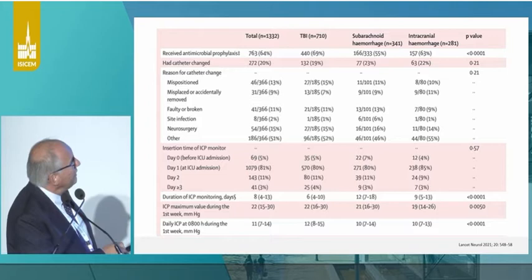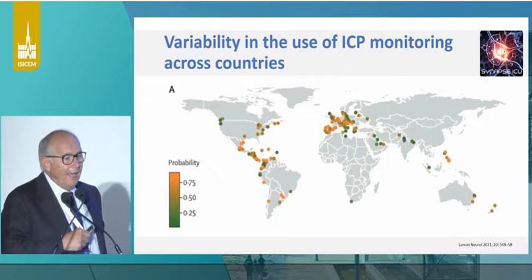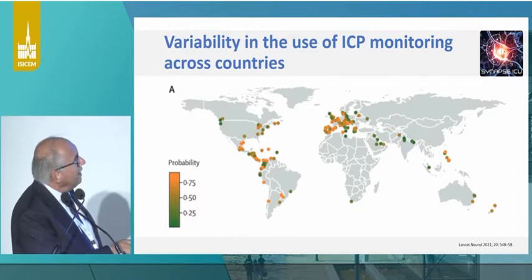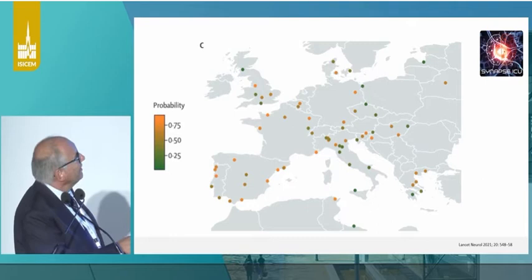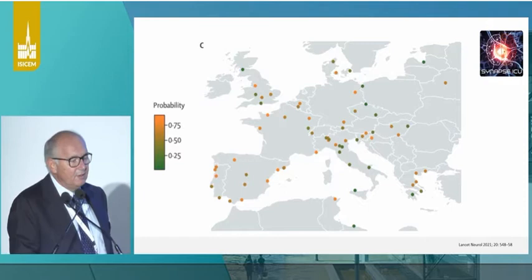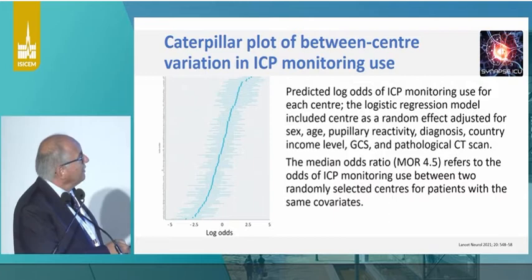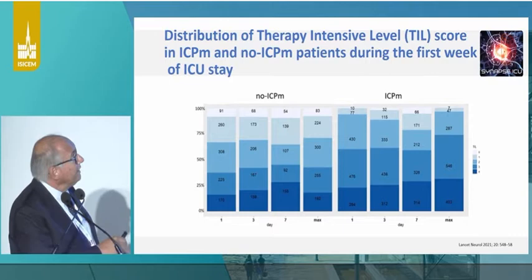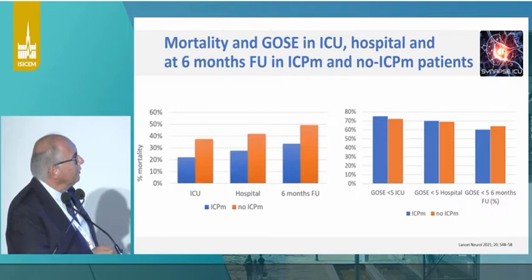We were able to capture variability in what is happening across centers. The probability for the same patient to have ICP monitoring ranges from 100% to 0%. Centers that are very close together in Europe have different policies for inserting the device, so the same patient could not receive the same treatment. The catheter propensity process showed a probability four times higher of having or not having ICP for the same patient. We also linked therapy — patients with ICP monitoring received more treatment, with greater therapeutic effort distributed across the day.